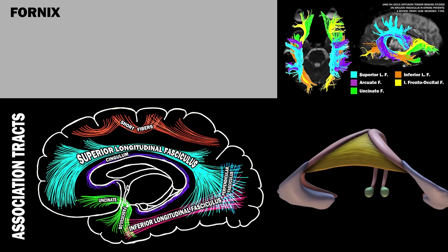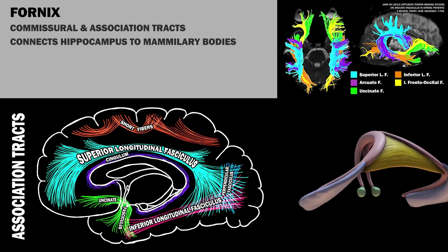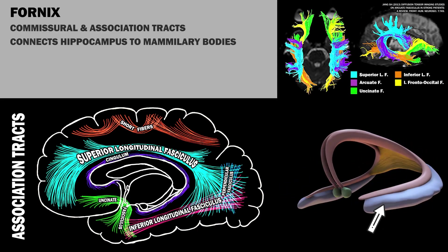The fornix, in addition to featuring a commissural tract, also contains association fibers. It connects the hippocampal gyrus with the mammillary bodies.